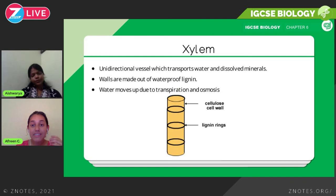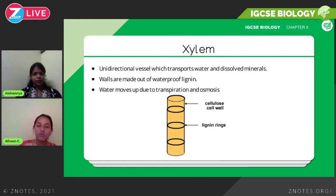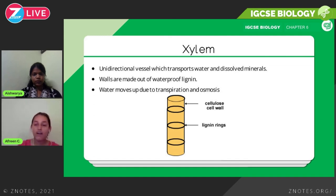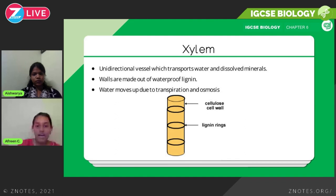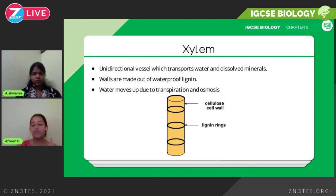The xylem transports water and minerals, and the contents move only in one direction — it is a unidirectional vessel. The walls of the xylem are made of waterproof lignin, preventing water from escaping. Water movement through the xylem occurs due to transpiration and osmosis. Transpiration is covered in more detail in the transport in plants chapter, but for now, remember: xylem is unidirectional, has waterproof lignin walls, and transports water and minerals via transpiration and osmosis.